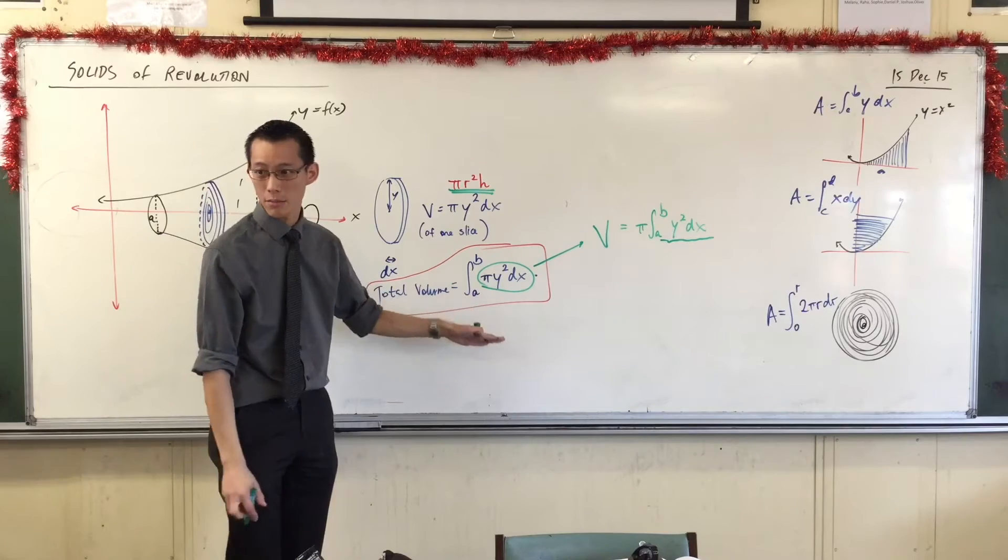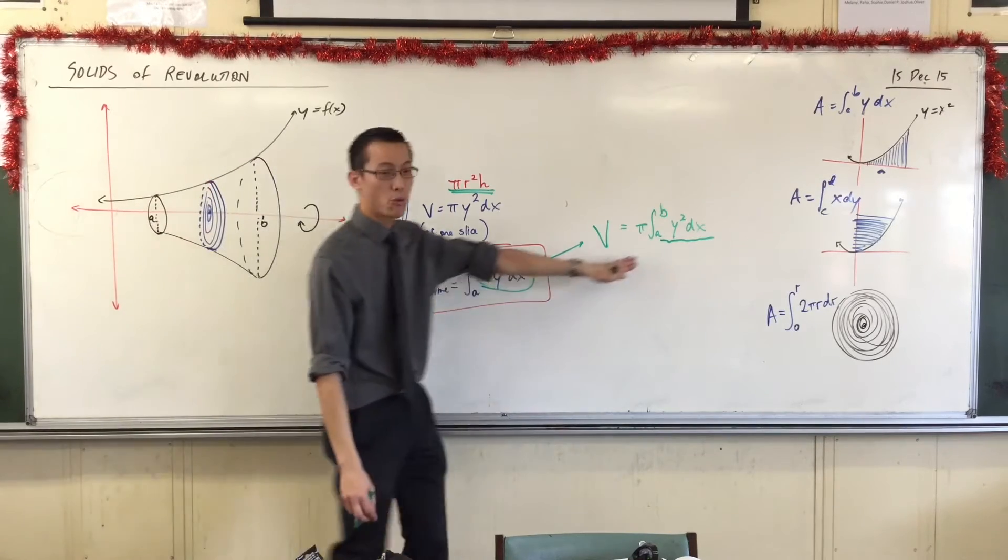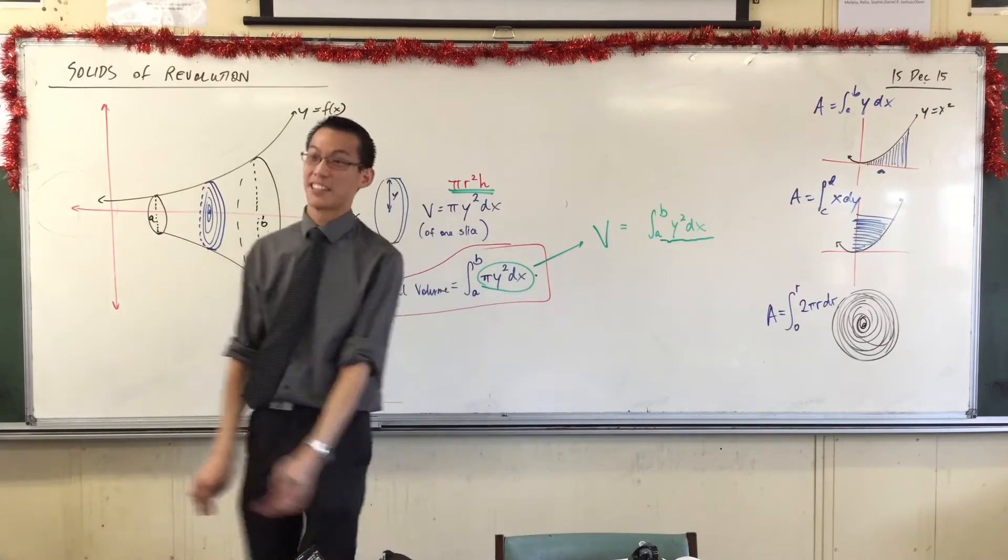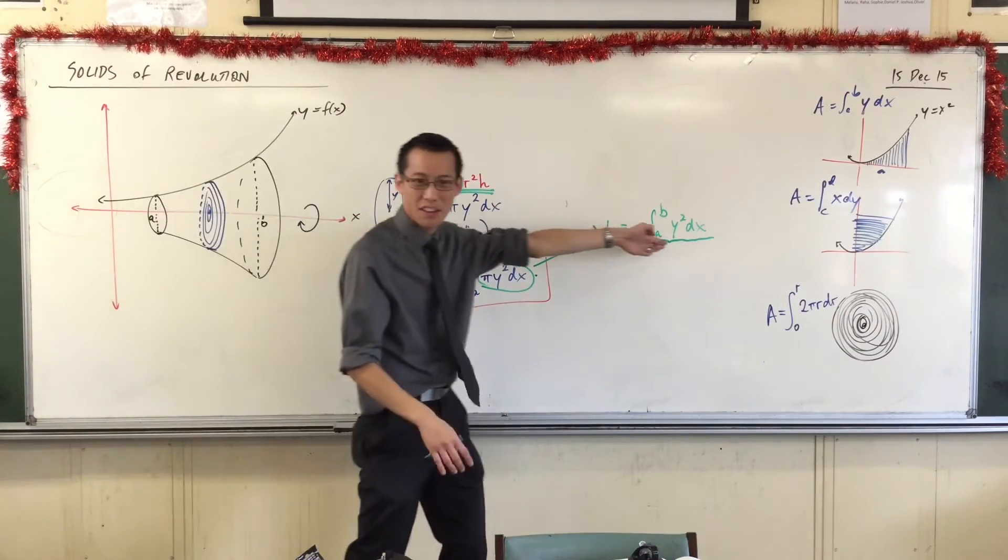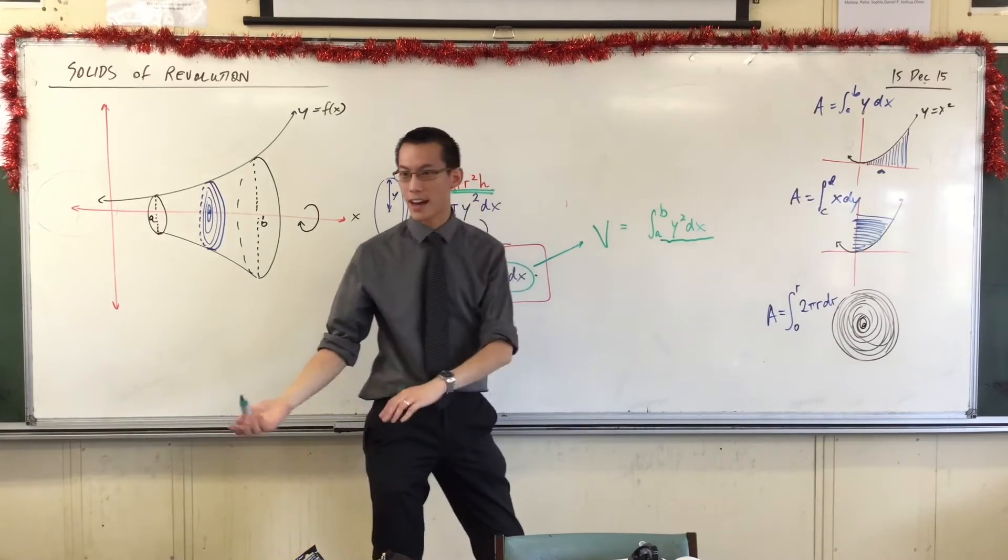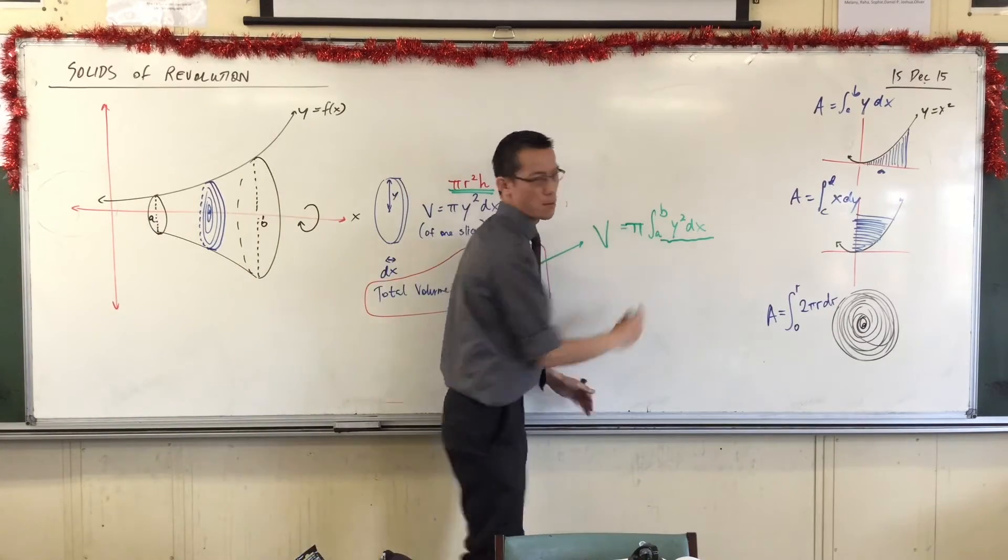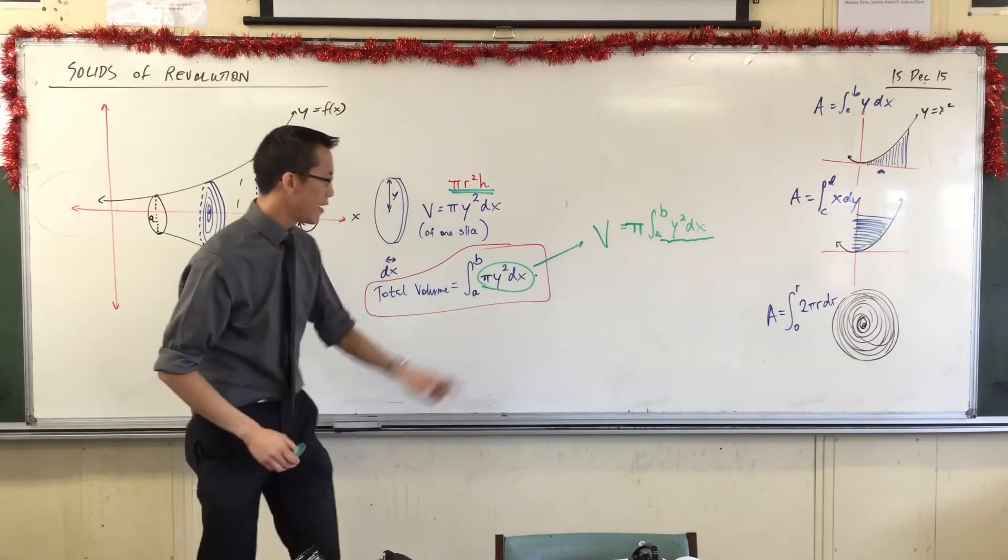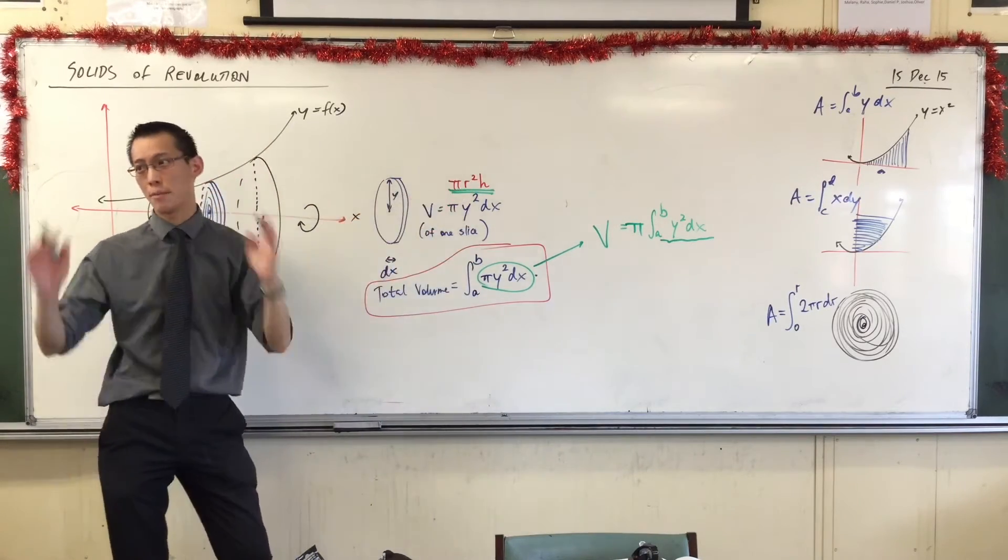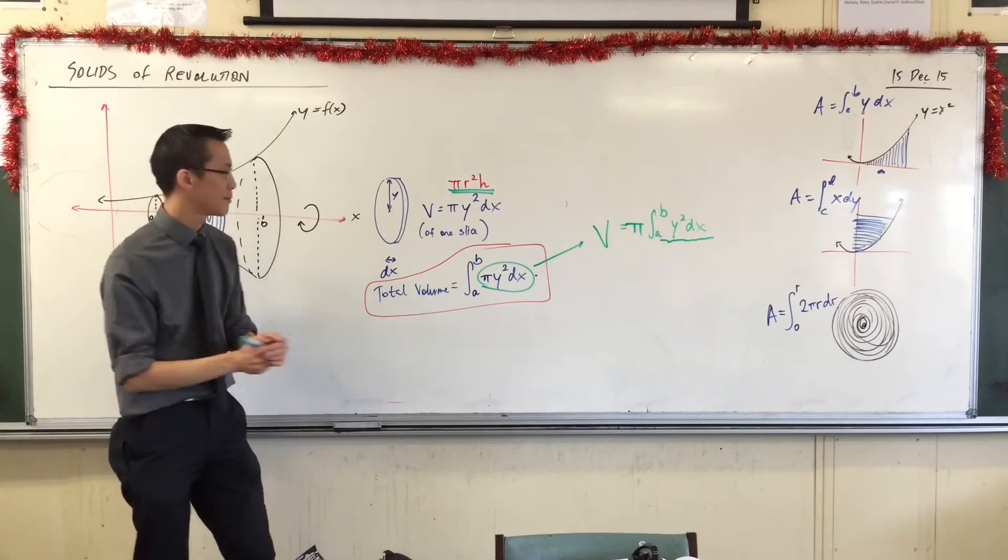The second reason is, when people write it like this, half the time, they forget the pi, okay? Because it's so easy to forget the pi. You're focusing on the integral. You're focusing on getting this thing right, and then integrating, and you wouldn't believe the number of times people forget the pi. If the pi is in the integral, and you remember it as pi r squared h, you'll remember it much better, okay?